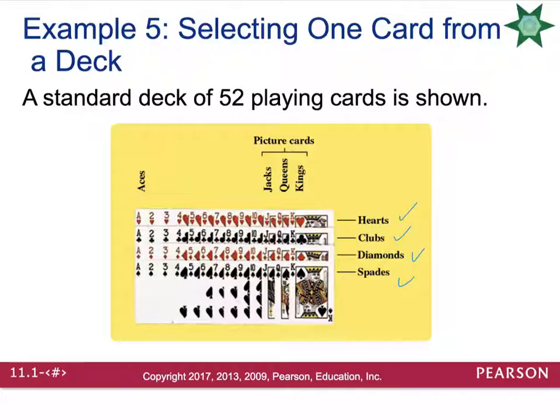There are face cards or picture cards. The jacks, the queens, and the kings. Aces do not count as picture cards, and if you want, you can kind of think of them as being a one, although they're not really.